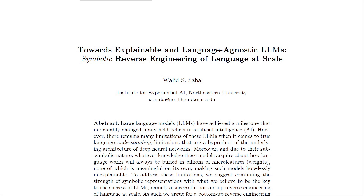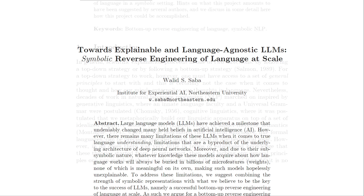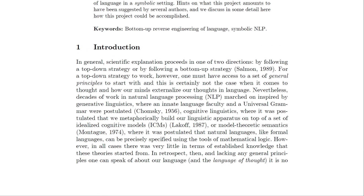Next, we have a paper by Wale Yitzhaber called 'Towards Explainable and Linguistic Agnostic LLMs: Symbolic Reverse Engineering of Language at Scale.' In general, language model explanations happen in one of two directions: by following a top-down strategy or a bottom-up strategy. But what exactly do these strategies entail? Let's find out.